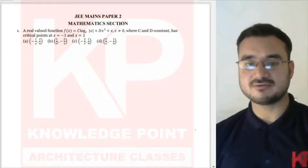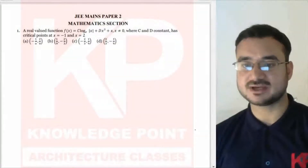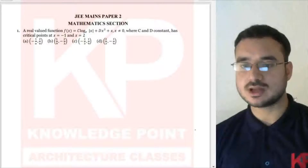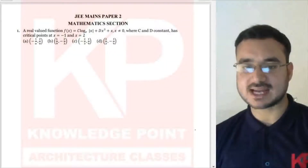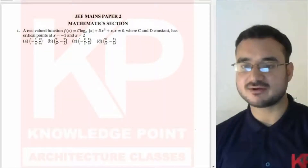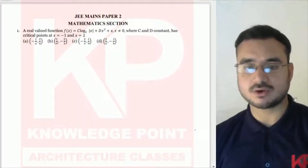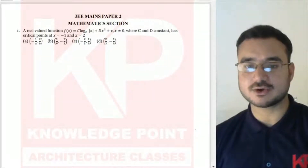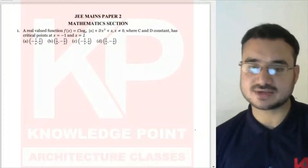Question number 1: a real valued function f(x) = c·log|x| + dx³ + x, where x is not equal to 0 and c and d are constants, has critical points at x = -1 and x = 2. We have to find the values of c and d. Critical points are the points at which the derivative of the function is equal to 0, so the critical points here are -1 and 2.